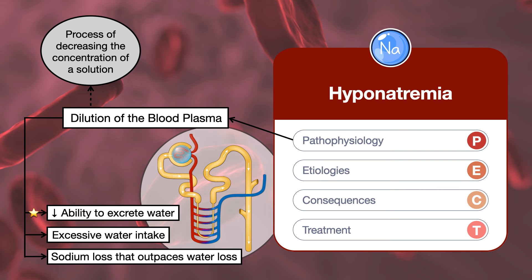The most common pathological change is the decreased ability of the kidneys to excrete water. It can happen for several reasons, but most often it is due to the overactivity of arginine vasopressin. As we transition into etiologies, you'll have the opportunity to see the various instances of that overactivity and why it happens.